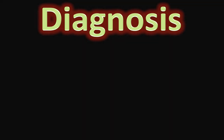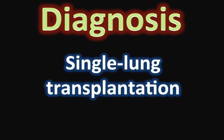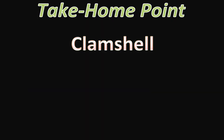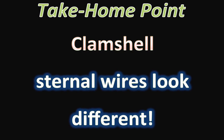So the diagnosis is single left-sided lung transplantation for chronic fibrotic lung disease. The take-home point is that clamshell wires have a different appearance compared to the classic post-CABG wires, and if you see them it's almost always a case of lung transplantation.